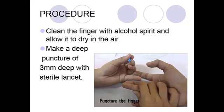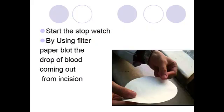Then make a deep puncture of 3 mm with sterile lancet. Start the stopwatch and use the filter paper and blot the drop of blood coming out from the incision.